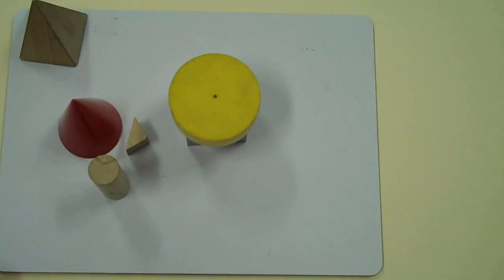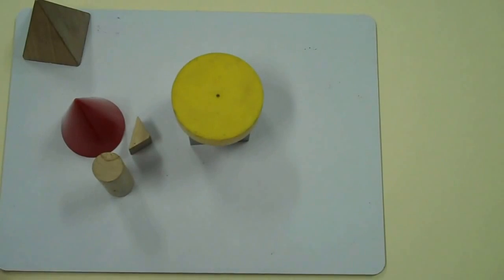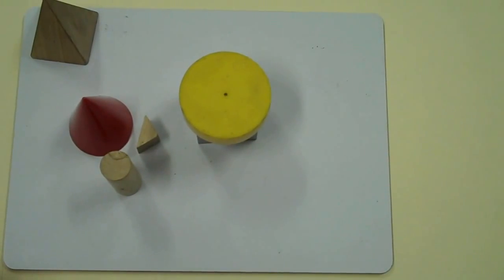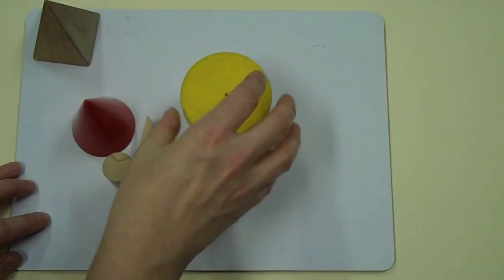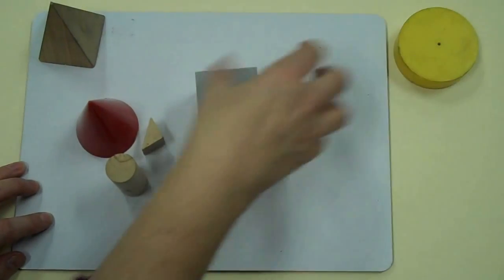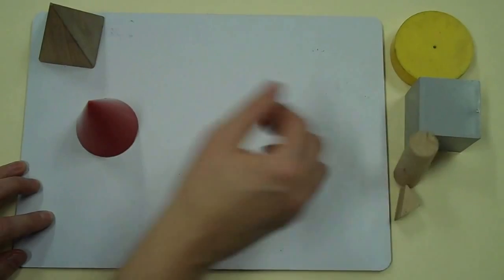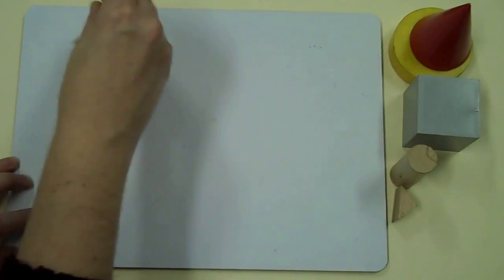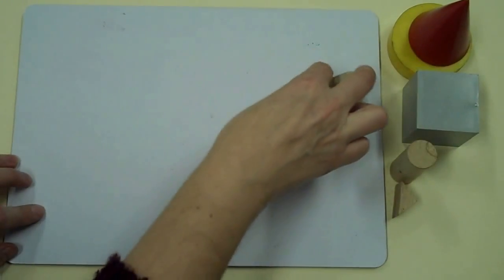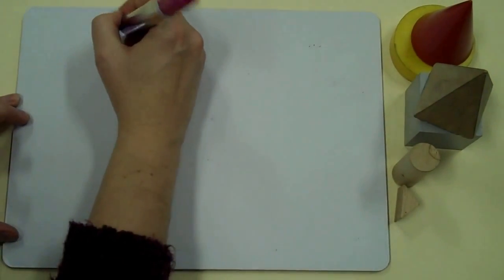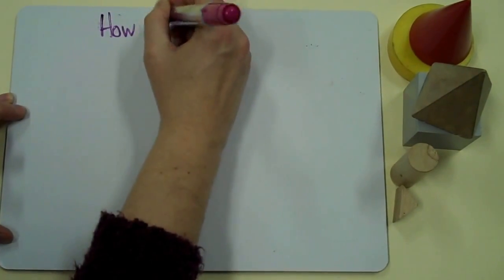Now that I have brainstormed some possible attributes, I'm going to pick only one attribute to make my rule. My rule is going to be about how many faces. I'm going to write down my rule so I remember it. How many faces.